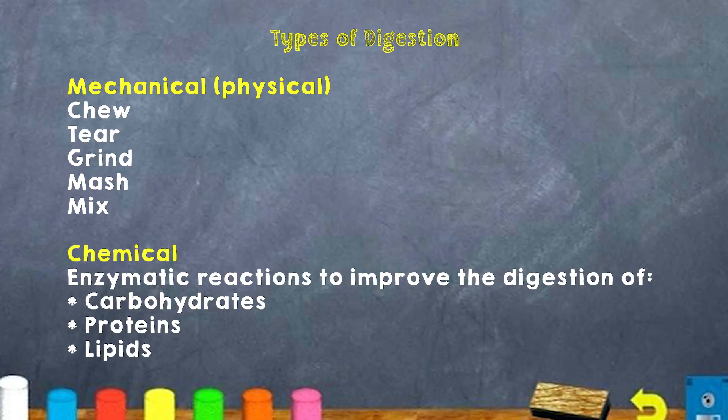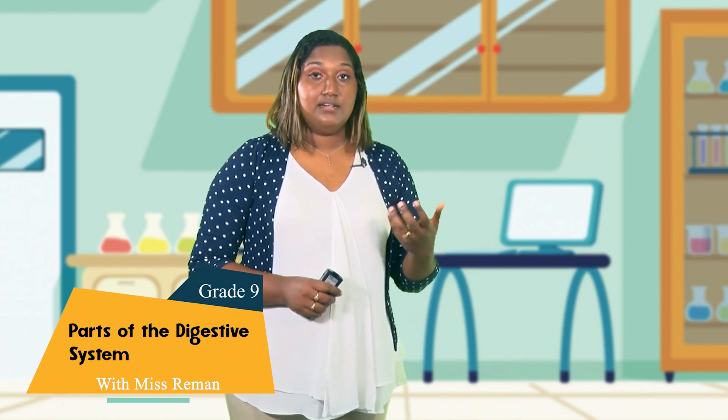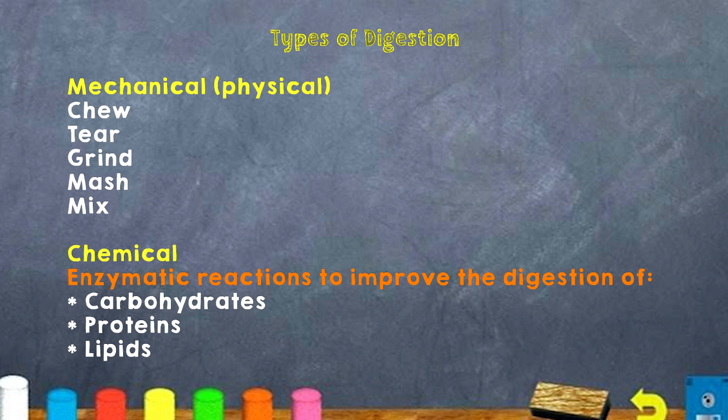Now what are the types of digestion? We have 2 main types: 1) mechanical, also called the physical aspect, and 2) chemical. In mechanical digestion, which occurs when you are chewing, food is torn, ground, mashed, or mixed. That mechanical aspect occurs in the mouth — the teeth play a vital role, aiding in the mechanical aspect of digestion. Chemical digestion involves enzymatic reactions to improve digestion of carbohydrates, proteins, and lipids or fats, with the mixture of chemicals helping these nutrients be absorbed.